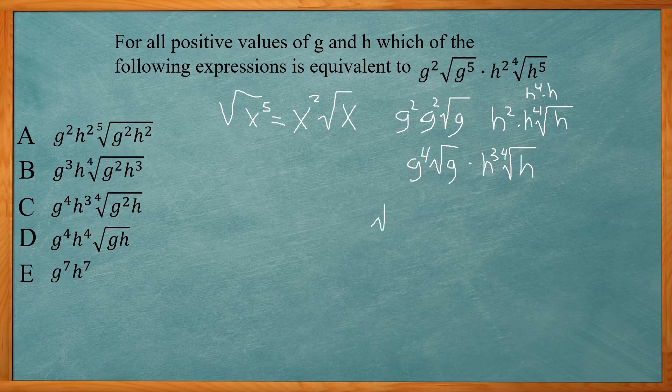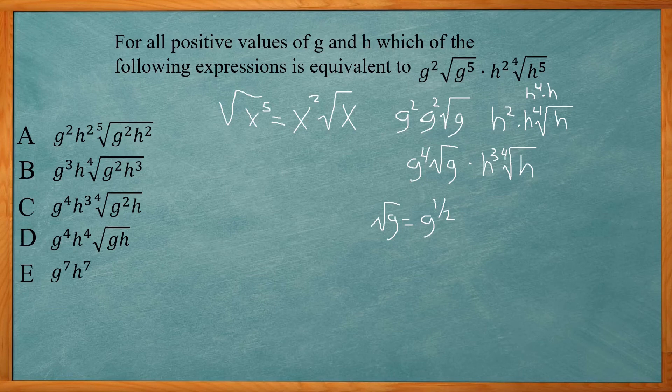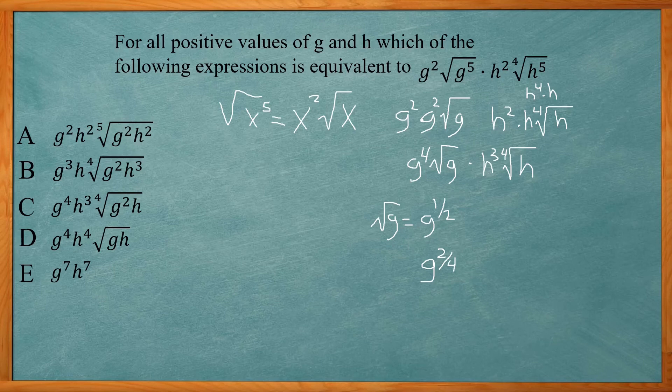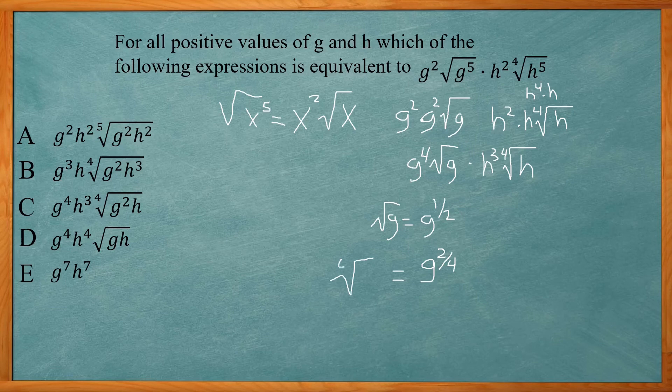So remember if I have square root of g, I can rewrite that as an exponent, g to the one-half power. And the number on the bottom gives me what root it is, second root or square root. If I want to change that to a fourth root, I can make it two over four, the same as one-half. Or that's going to be written as the fourth root of g squared.